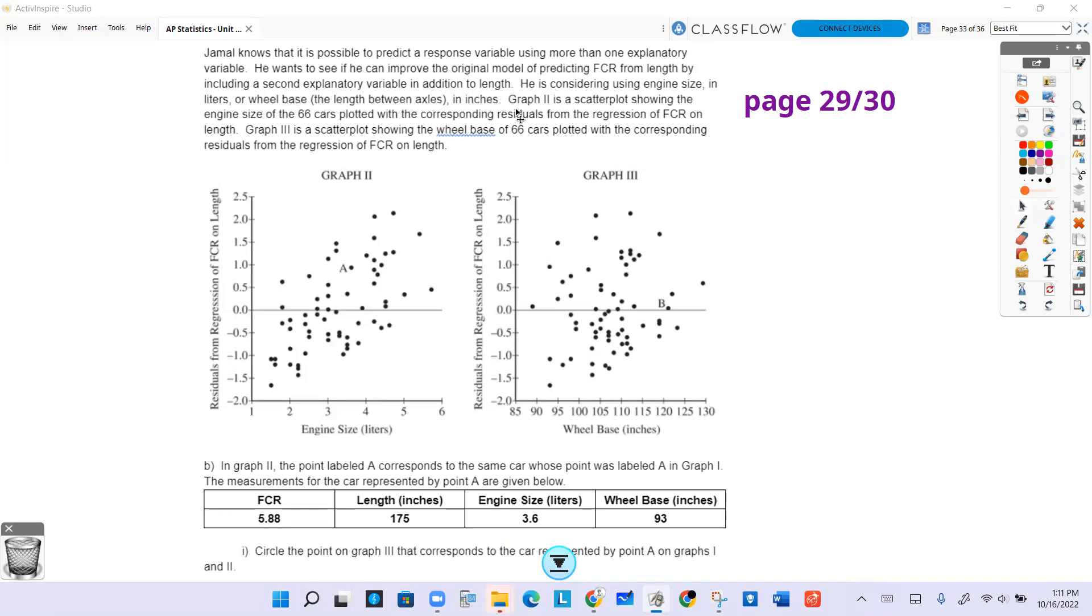Graph two is a scatterplot showing the engine size of the 66 cars plotted with the corresponding residuals from the regression of FCR on length. Graph three is a scatterplot showing the wheelbase of 66 cars plotted with the corresponding residuals from the regression of FCR on length. The residuals come from the original equation.